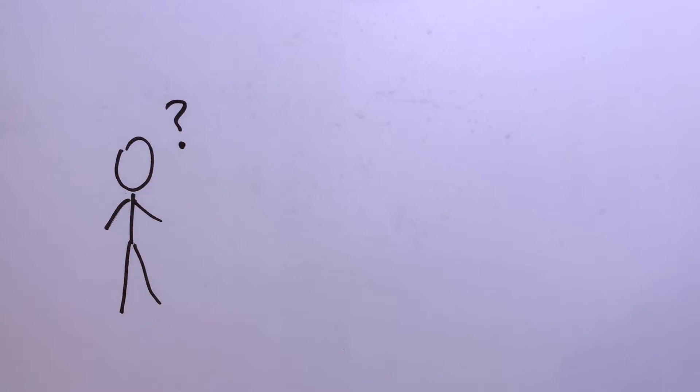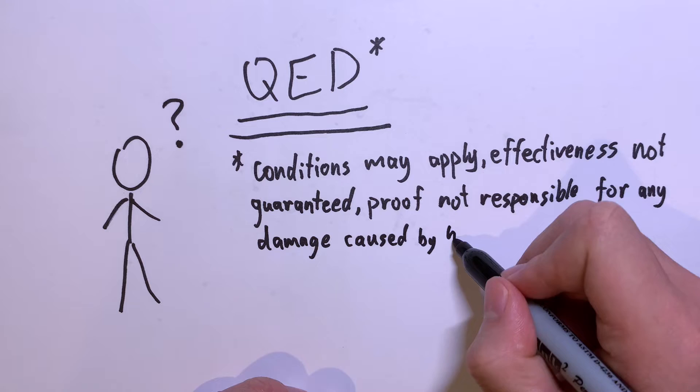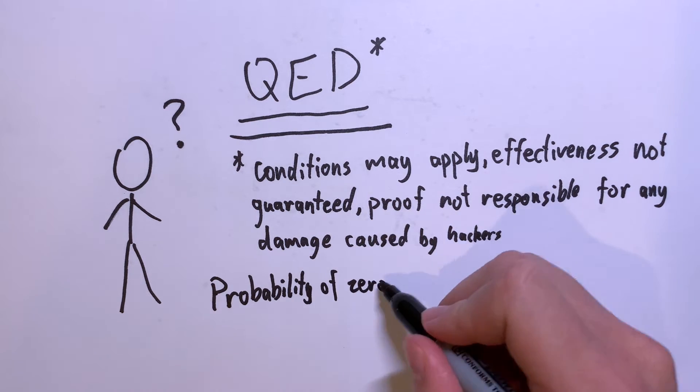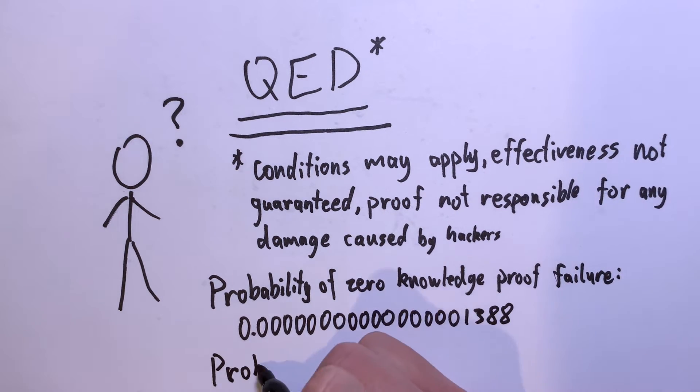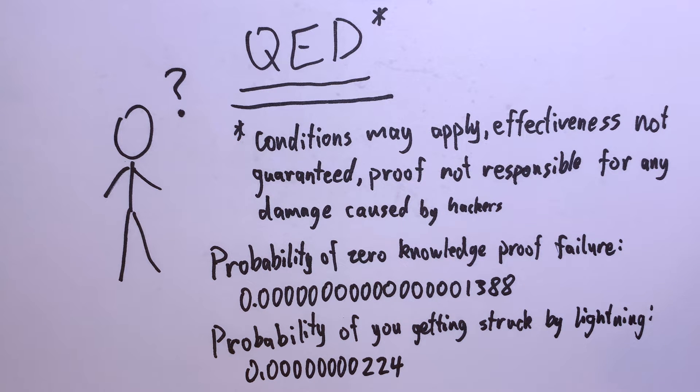You might have some questions. First, is this a proof if the soundness is just with some probability? What if the liar just gets lucky? Well, in real life, we can just set the threshold to be really really high, so it's extremely unlikely for liars to pass the test. If the probability of a liar getting lucky is smaller than you getting struck by lightning right now, it's probably not worth worrying about.